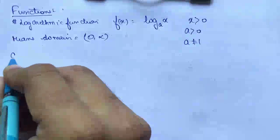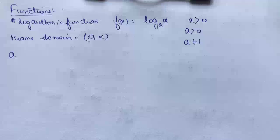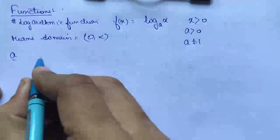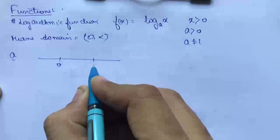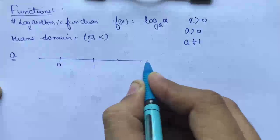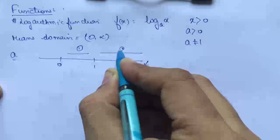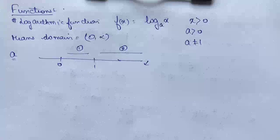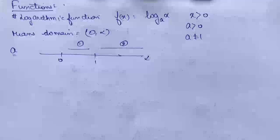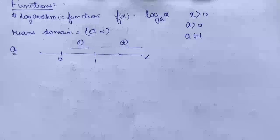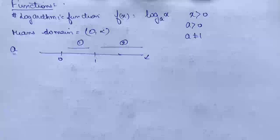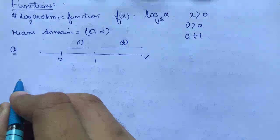Now what about 'a'? Same as we saw with exponential function — if a is greater than 0, the value of a could lie between 0 to 1 or between 1 to infinity. So depending upon both conditions, there will be different types of values.